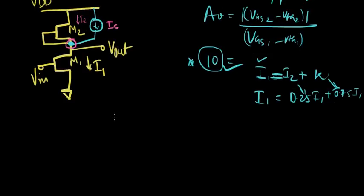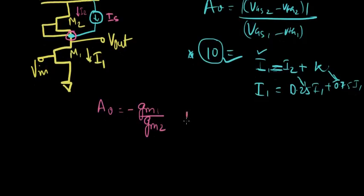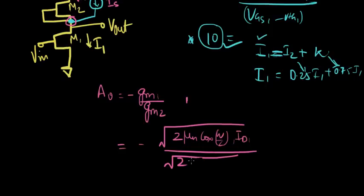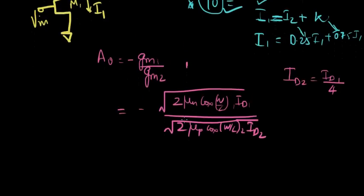Let's write this down here first. If you watch the other lectures carefully, we derived the gain equation from here: GM1 over GM2. Now I'm not considering GMB2 because I'm neglecting body effect here. And what do GMs stand for? They stand for root of 2 mu N Cox W over L1 ID1 over root of 2 mu P Cox W over L2 ID2. And what is the relation between ID2 and ID1? ID2 equals ID1 over 4. It's a quarter of the current carried by this transistor.